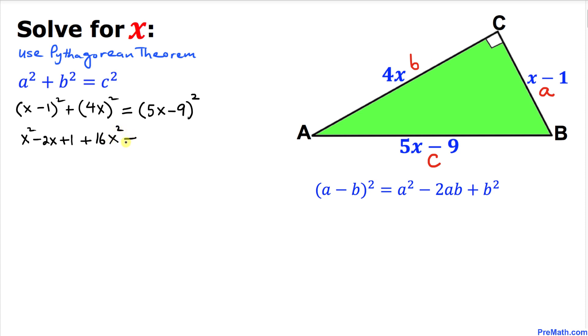Let's take care of this one. That is going to be 16x squared. On the right hand side, we're going to apply this formula once again. That's going to give us 25x squared minus 90x, and 9 squared is 81.